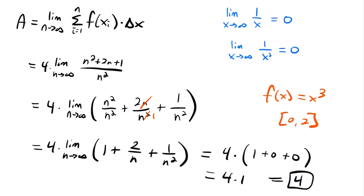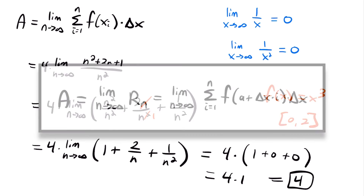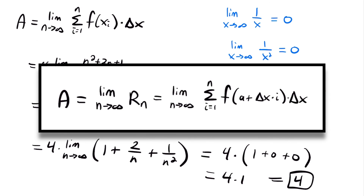Just to stress this: you're only going to want to use right endpoints with this formula. The equation we used was the area equals the limit as n approaches infinity of the sum from i equals 1 to n of f(x sub i) times delta x, where x sub i uses the right endpoint definition. This is the formula you need to know to find the area under a curve using the limit definition of area. Check out our examples video linked at the end if you want to see more problems, and leave any questions in the comments.